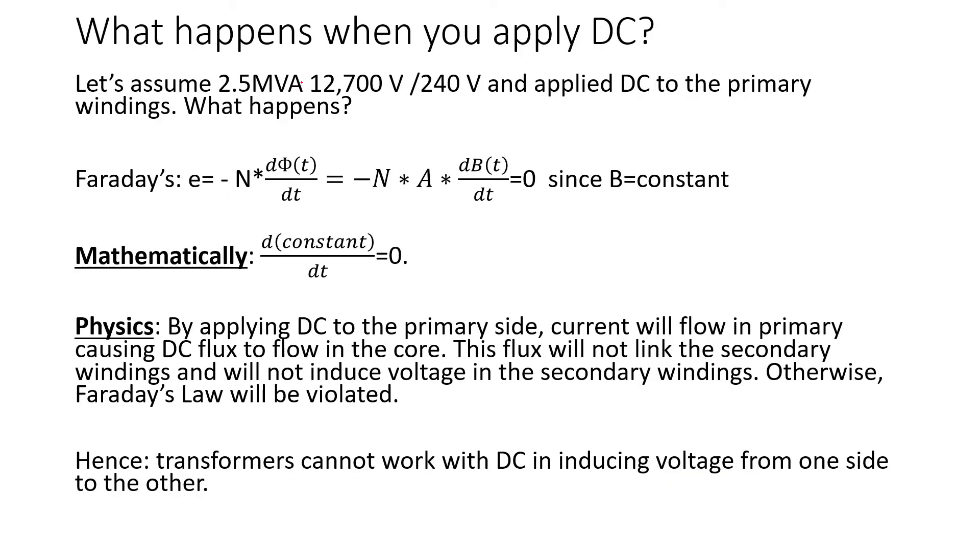So what happens when you apply DC? Let's assume you have a 2.5 MVA 12,700 volt or 240 volt transformer and you apply DC to the primary winding. What happens with Faraday's law induced voltage in the secondary winding?